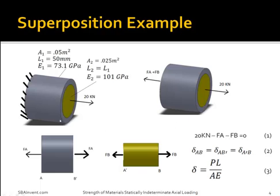From this problem, I can see that there is one material inside a different material. Due to this fact, I'm going to assume that the deflection for both materials is equal, and from that I'm going to derive the second equation that I'll use to solve for FA and FB.